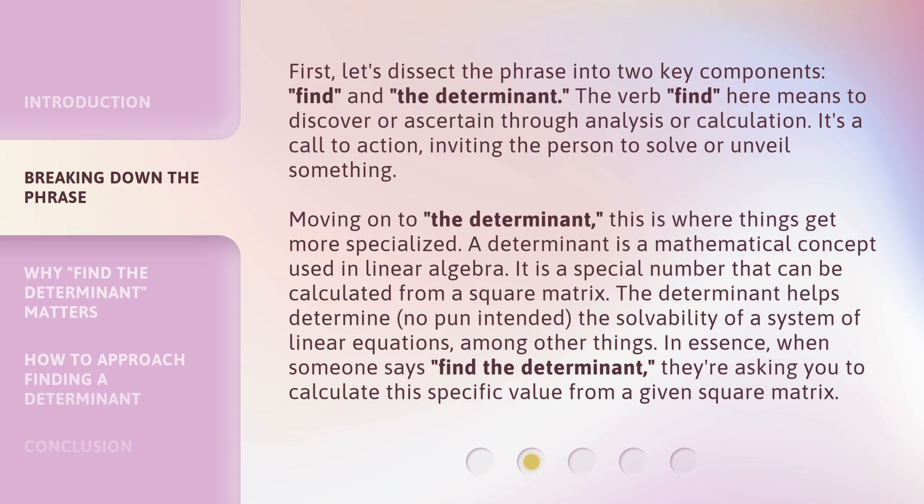Moving on to the determinant. This is where things get more specialized. A determinant is a mathematical concept used in linear algebra. It is a special number that can be calculated from a square matrix. The determinant helps determine, no pun intended, the solvability of a system of linear equations, among other things.